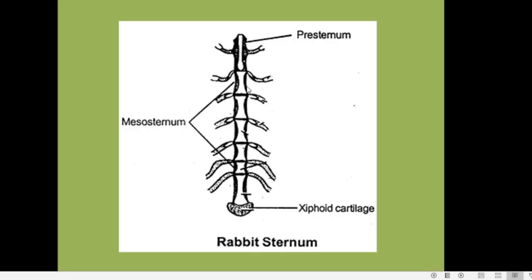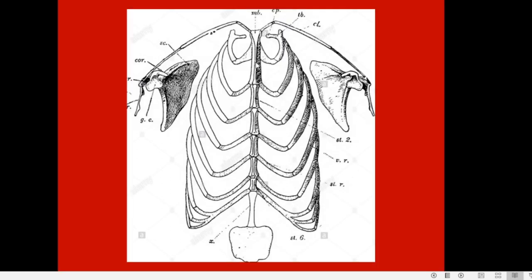The sternum of rabbit is long, narrow, and segmented. The segments making up the sternum are called sternibrae. The sternum is divided into the presternum, the mesosternum (made up of 4 to 5 sternibrae), and the metasternum or xiphisternum (made up of one sternibra). Attached to the metasternum is a broad cartilage called the xiphoid cartilage or xiphisternal cartilage.